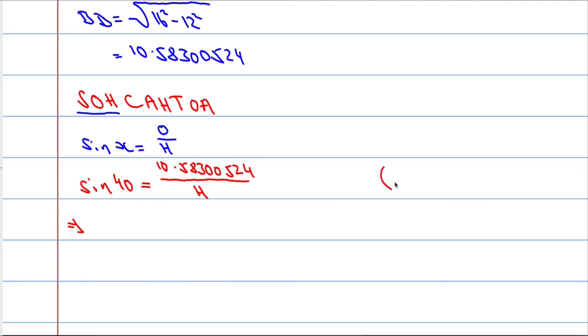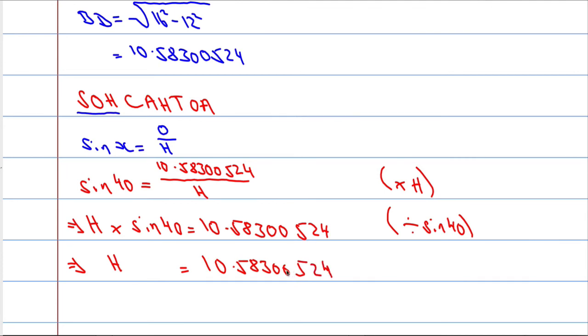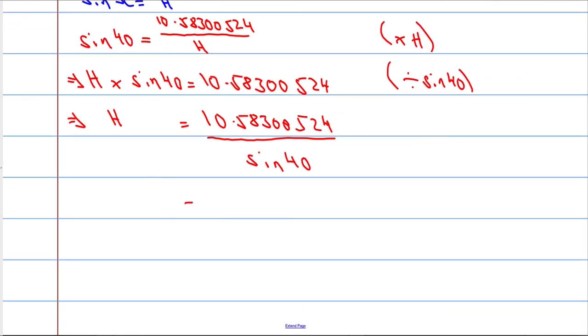We're going to multiply both sides by H, and we get H multiplied by sin of 40 will equal this 10.58300524. And then we're going to divide both sides by sin of 40. So, a bit of algebraic manipulation here.